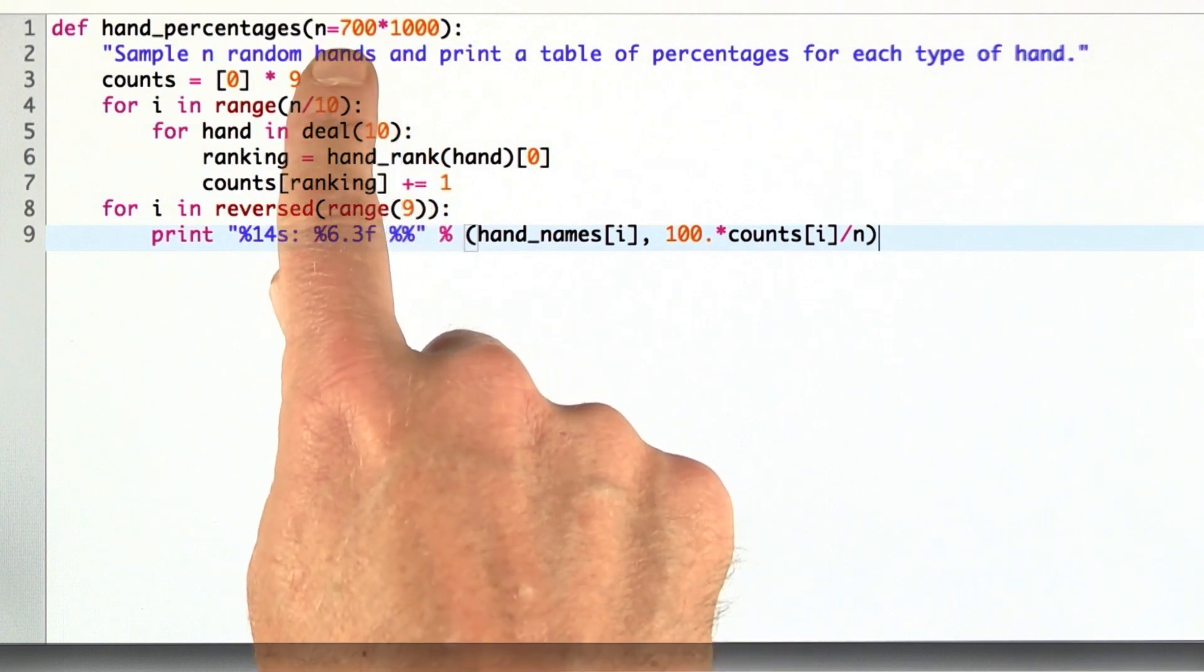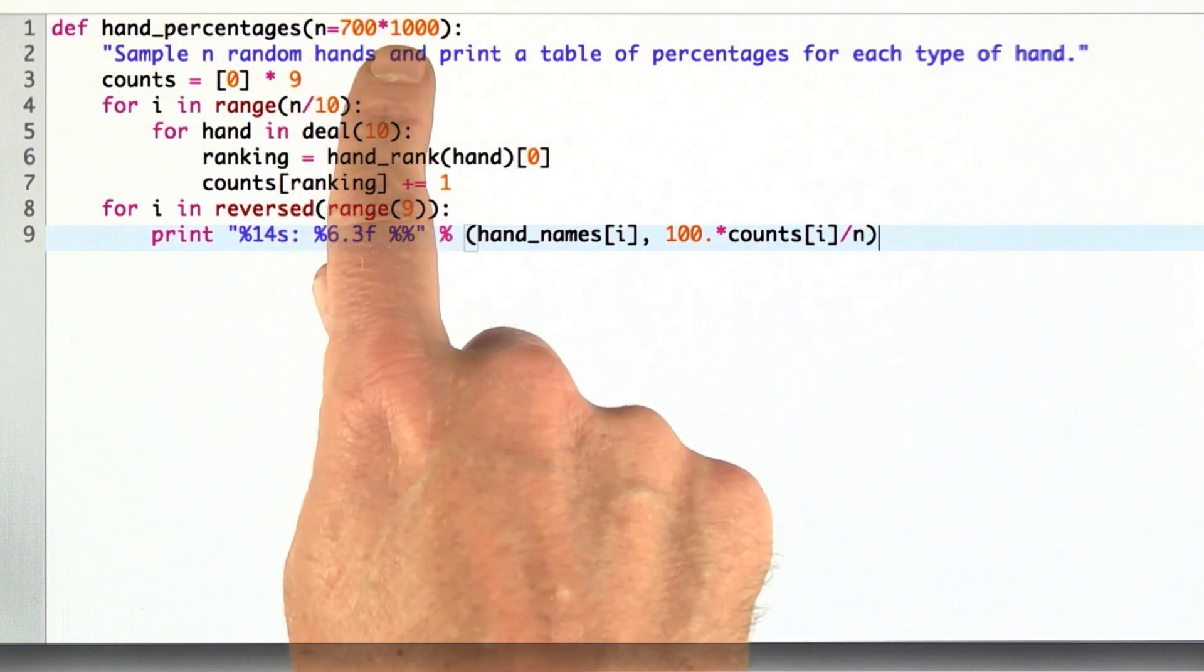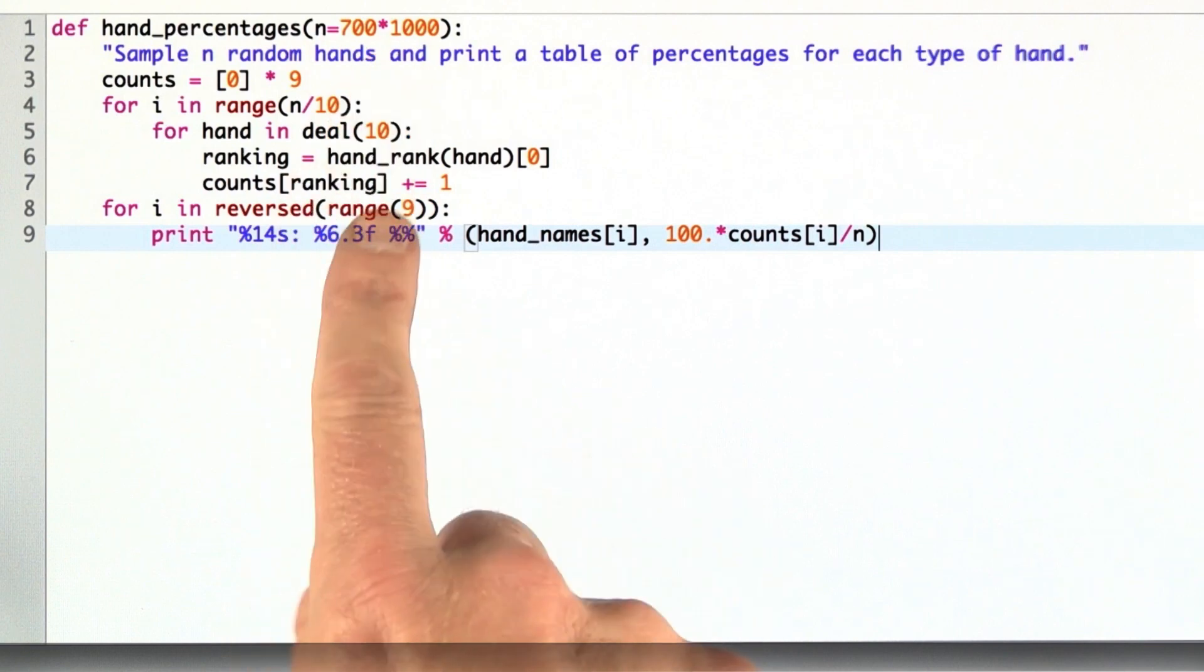If you want to run it here, put in a smaller value for n, say 1,000 or so, or if you want to run it on your own home machine, you're welcome to go ahead and do that.